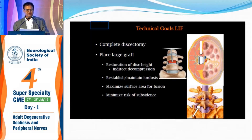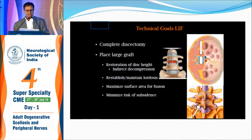In anterior fusion, one can do a more complete discectomy than posterior fusion — the amount of disc removal is more. One can place a larger graft, restore disc height, and achieve indirect decompression because increasing disc height corrects foraminal stenosis. Lordosis can be maintained with grafts that offer 6 or 10 degree angulation. The area of fusion is also greater because anterior grafts are three times bigger than posterior grafts like TLIF and PLIF grafts, and the chances of subsidence are less.